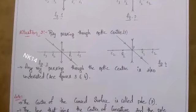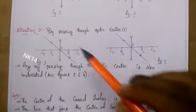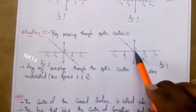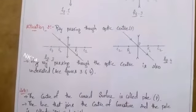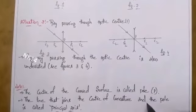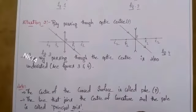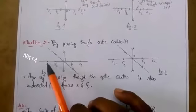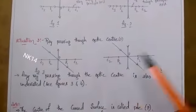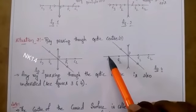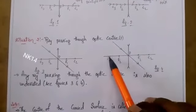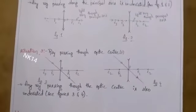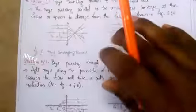Note: the center of the curved surface is called the pole. For both convex and concave lenses, the center of the lens is taken as the pole. The line that joins the center of curvature and the pole is called the principal axis. This applies to both convex and concave lenses.